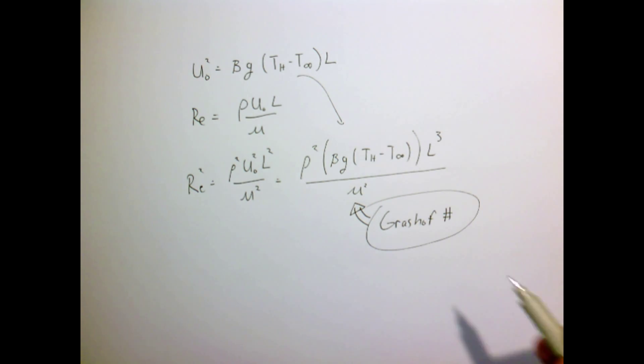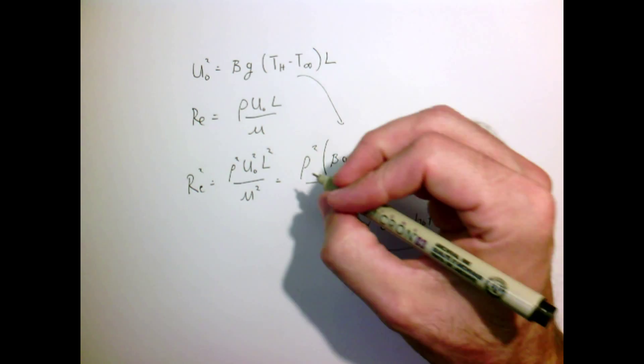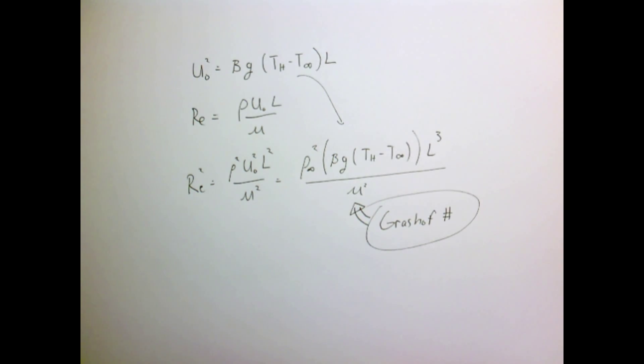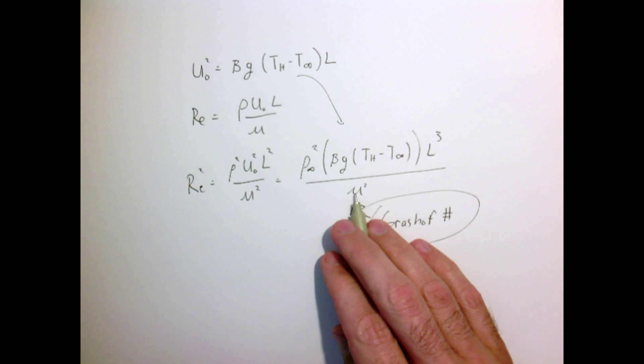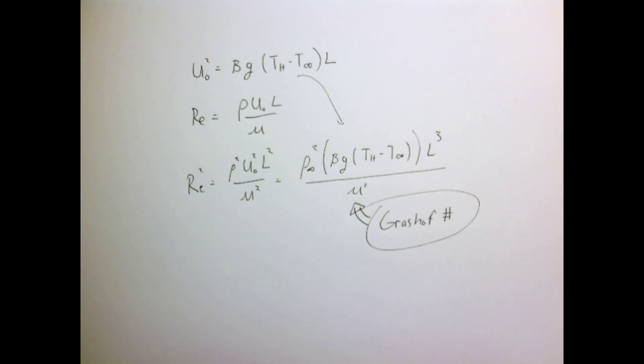If we look at that number, we see it depends upon the density of the fluid—which again here would just be the nominal density—fluid property, fluid property, gravity, temperature difference, size of the object.